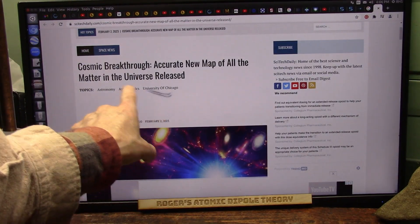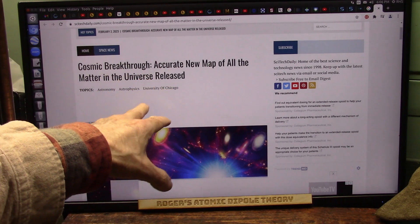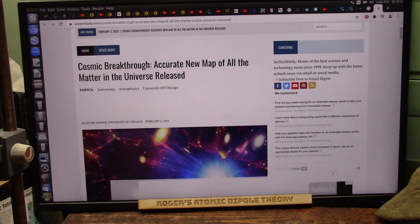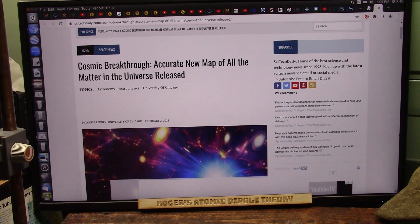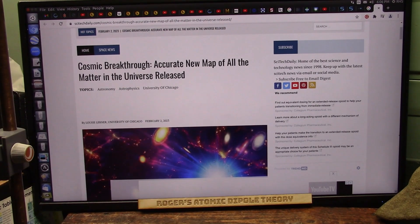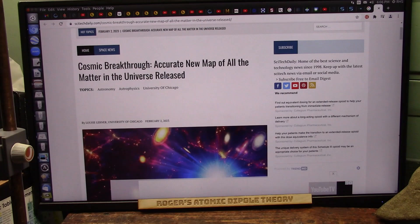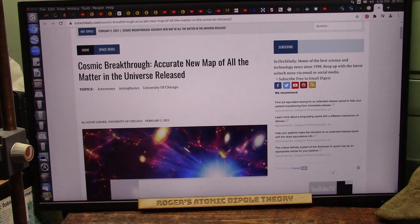University of Chicago, cosmic breakthrough, accurate new map of all the matter in the universe just released. Always based on the laws of Hubble and Einstein and all these things about the speed of light and it's all a vacuum. They know it's not true. And they still come up with this stuff every day. Refuse to discuss any of these problems. We don't want to talk about it. We got laws to uphold. Well, I got laws, too. It's called truth.